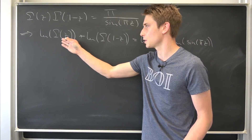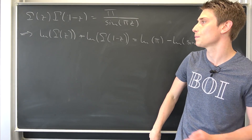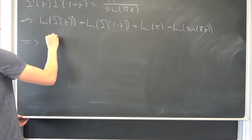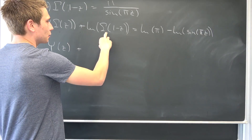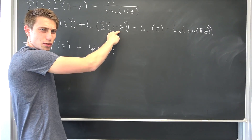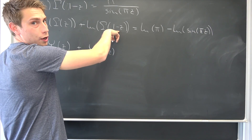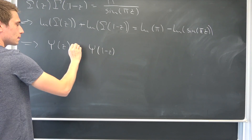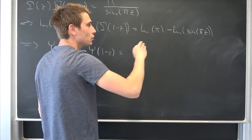The cool thing is we can just differentiate piecewise each and every term with respect to z. This gives us the digamma function of z, plus the digamma function of 1 minus z times the inner derivative by the chain rule, which is negative 1. On the right side, differentiating the natural log of pi with respect to z gives us 0.